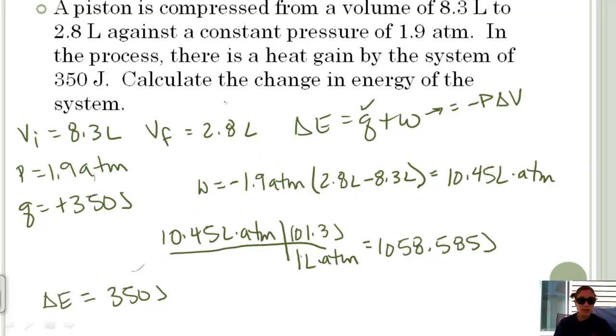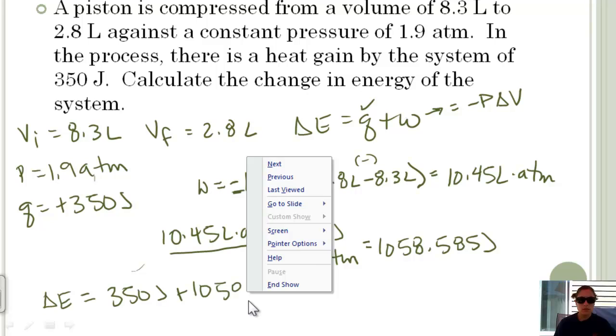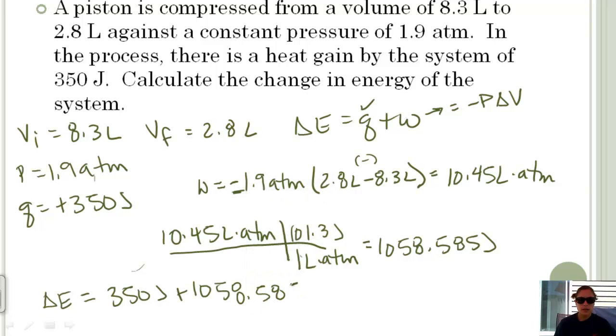Now let's plug in. We have our delta E equals Q, which was the 350. Just checking my work sign, I had the negative 1.9, and then this was also negative because it's contracting, so that's going to give us positive work. So that looks good. Then we've got plus 1058.585 joules. When we add those together, we get 1408.6. If we look back up into the problem, it looks like I want two significant figures, so my answer becomes 1,400 joules.